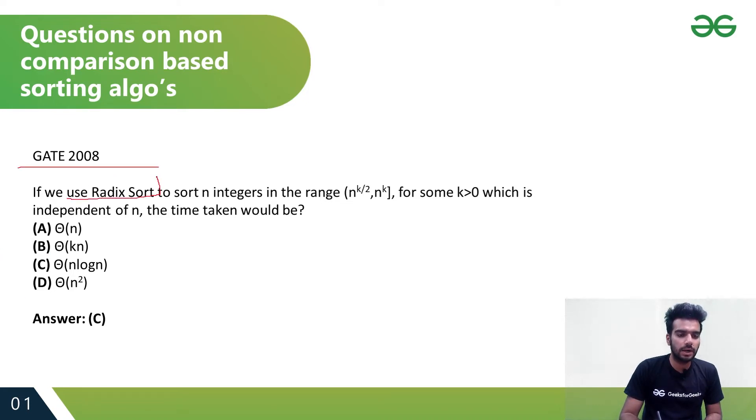The question asks: if we use Radix Sort to sort n integers in the range [n^(k/2), n^k] for some k>0 which is independent of n, the time taken would be?